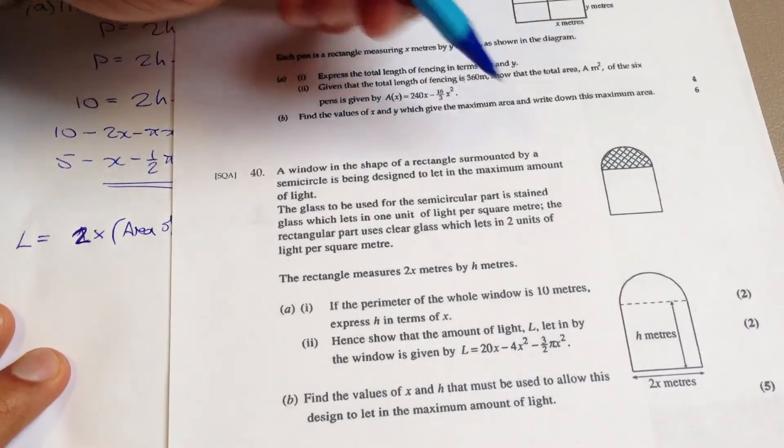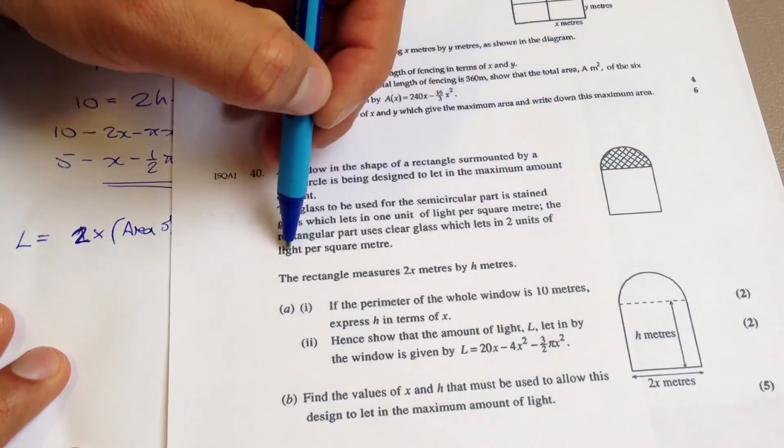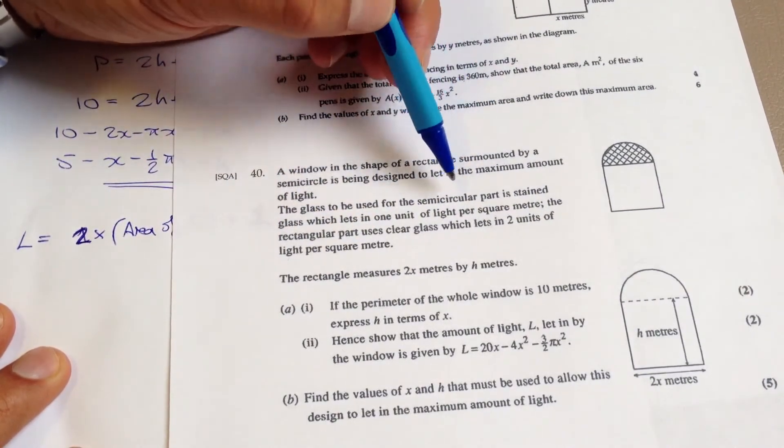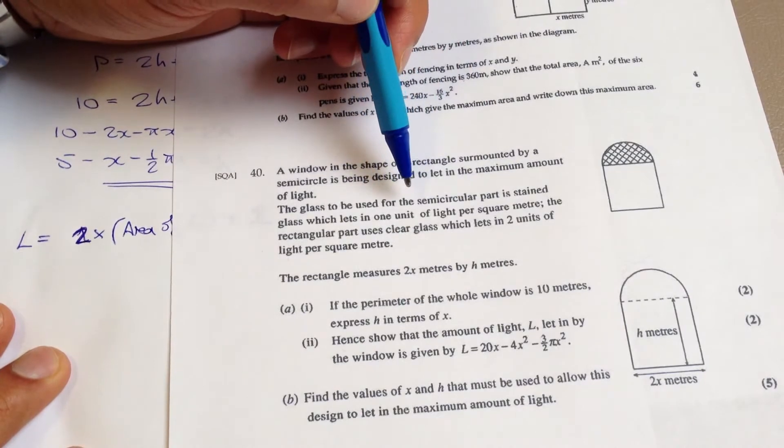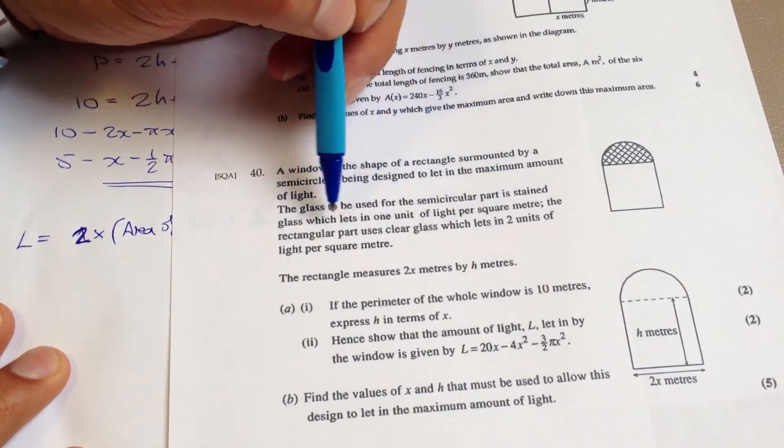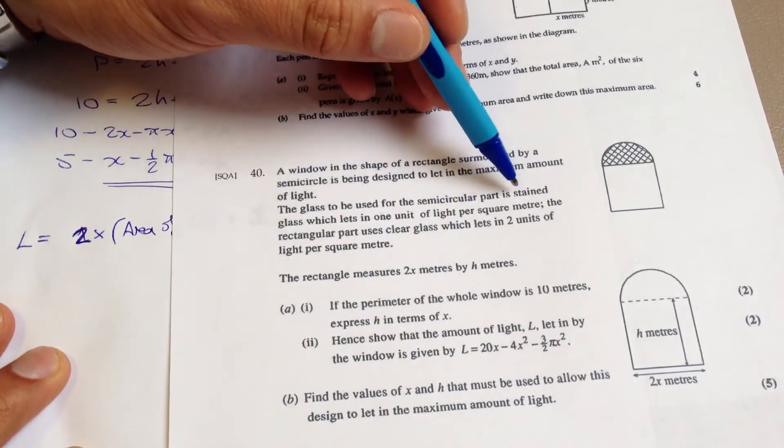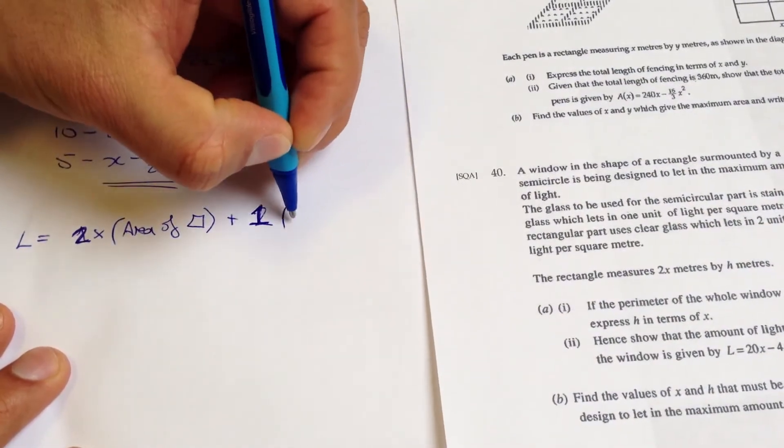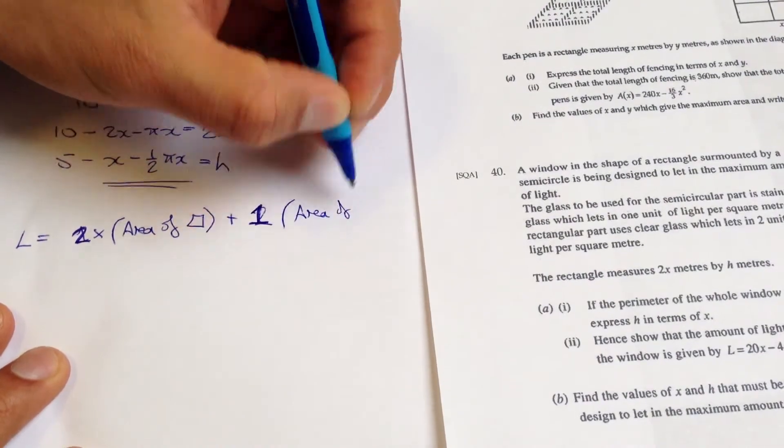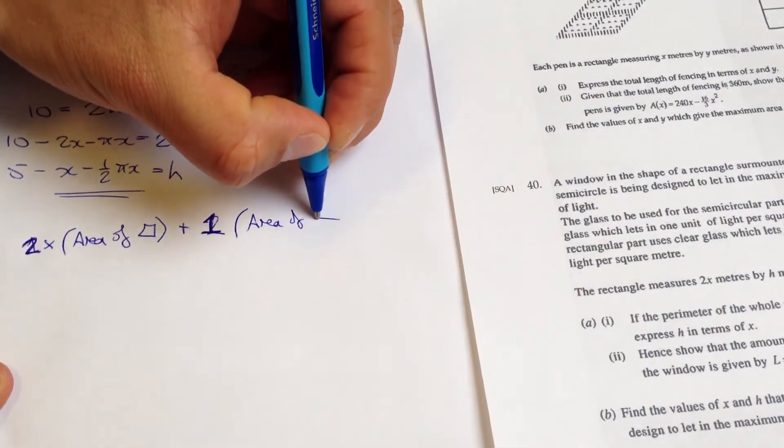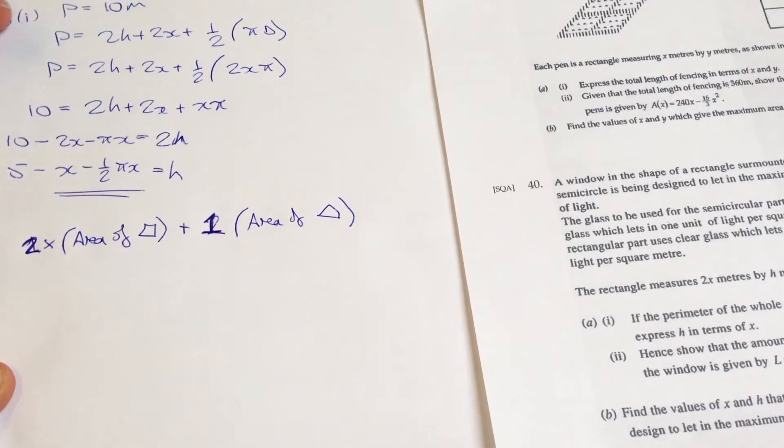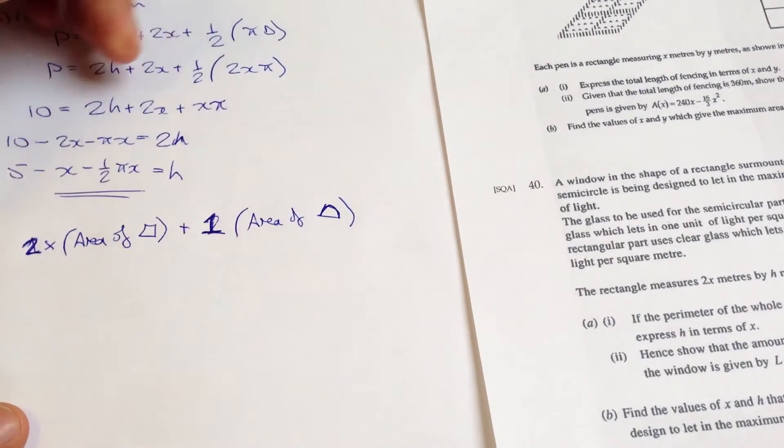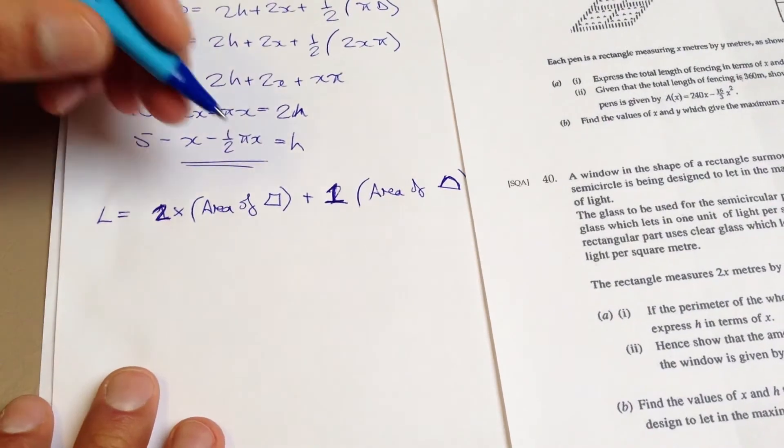Because, and the reason I did that was, two units of light come in per square metre for the rectangle and only one unit of square light comes in for the semicircular stained glass part. So that will be two times the area of the rectangle plus one times the area of the semicircle, which I'll just draw very badly like that. It almost looks like a triangle. Yeah, I don't do art. So let's do that.